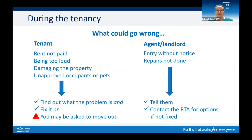Sometimes there are things that go wrong in a tenancy. If you're not meeting your tenant responsibilities, you can be given an official notice called a Notice to Remedy Breach. This notice lets you know the agent or landlord thinks you have done something that you agreed not to do when you signed the lease. As a tenant, you might get a Notice to Remedy Breach for several reasons.